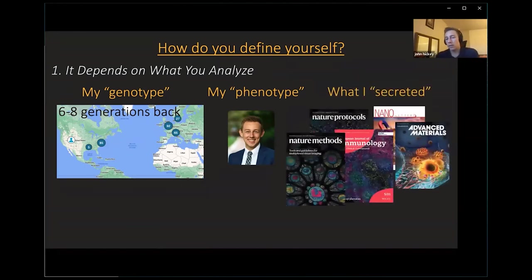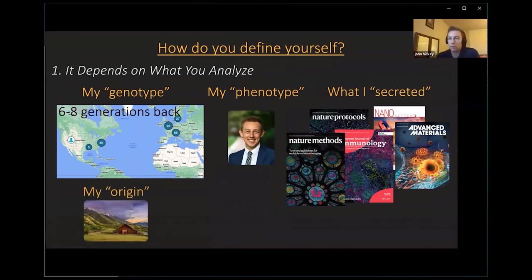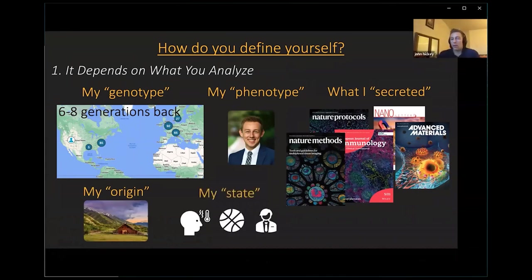Or you could define me — and a lot of scientists might — by what I produce: the journal articles I write and the scientific findings I produce. Another way to define myself is by my origin — I'm from a small farming community near some mountains — or my current state.